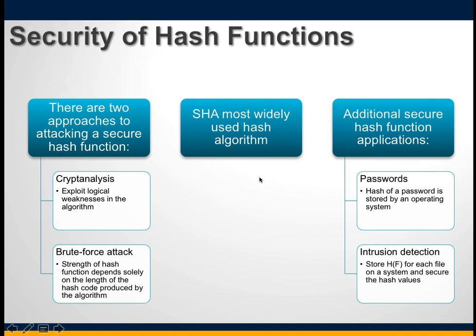The most widely used hash function in recent years has been SHA — the Secure Hash Algorithm — developed by NIST in 1993. When weaknesses were discovered, a revised version was issued in 1995, and further revisions followed in 2002. SHA started with 160-bit output and now runs at 512 bits, known as SHA-512. These new versions have the same underlying structure and use the same types of modular arithmetic and binary operations as the original algorithm.